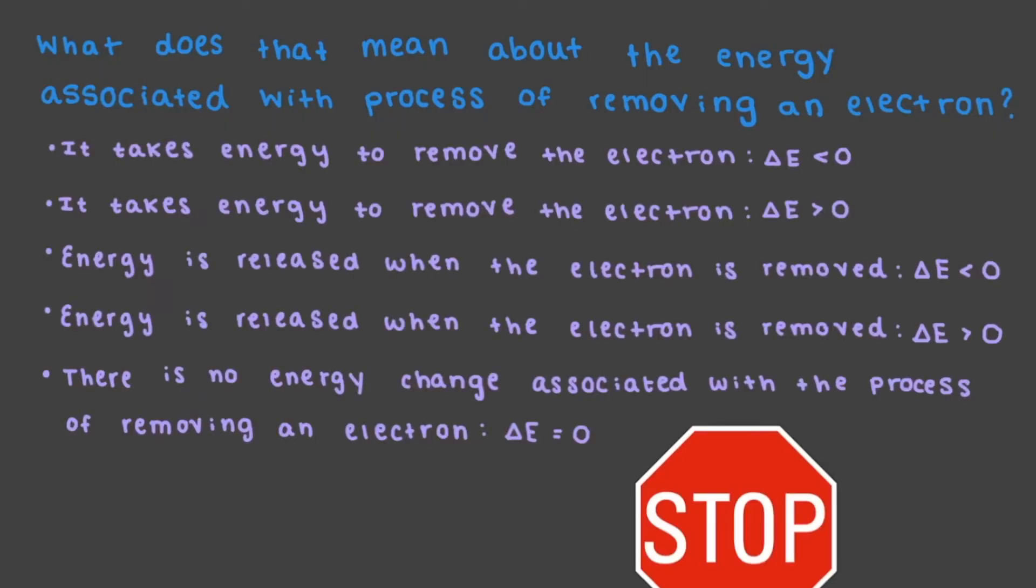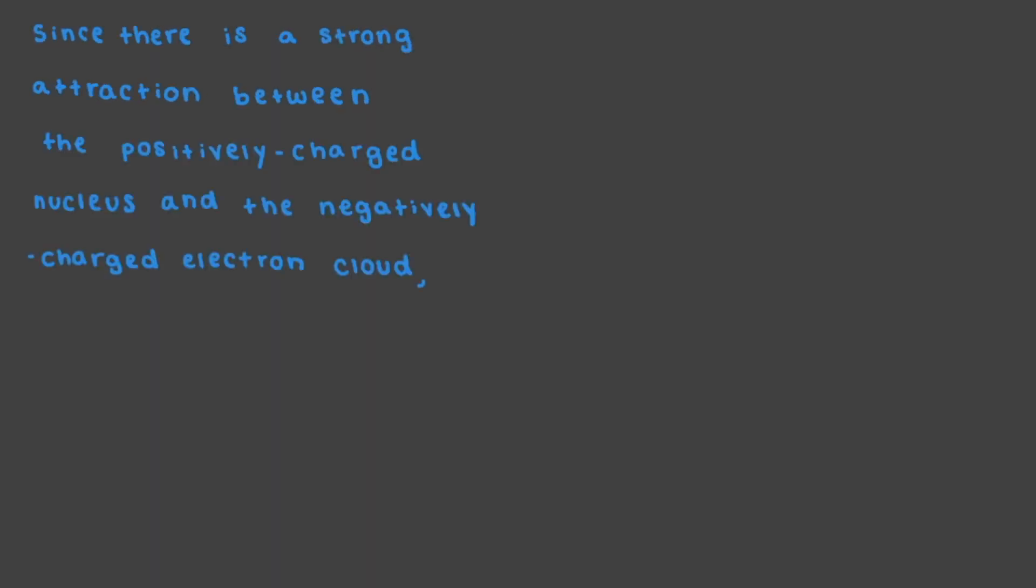As you know, negatively charged things are attracted to positively charged things. This is the essence of Coulomb's law. What does that mean about the energy associated with the process of removing an electron? Since there is a strong attraction between the positively charged nucleus and the negatively charged electron cloud, Coulomb's law tells us that we will need to add energy to remove the electron.